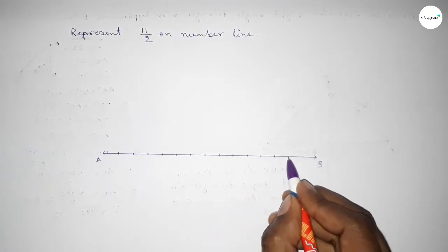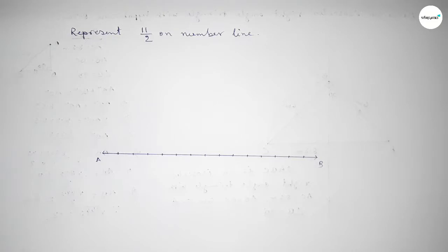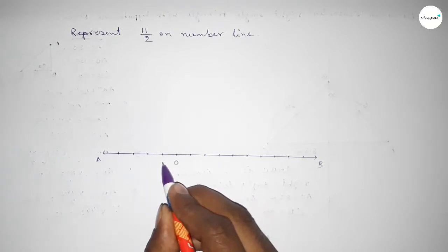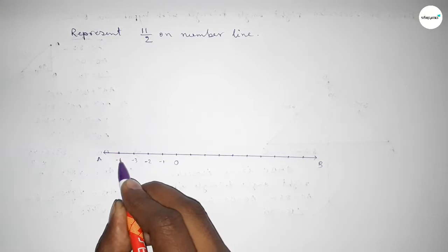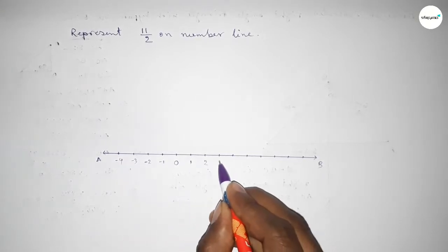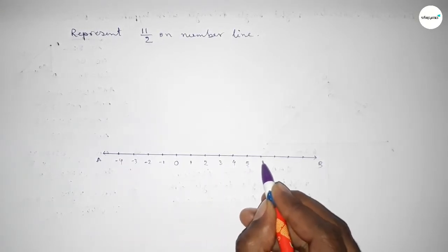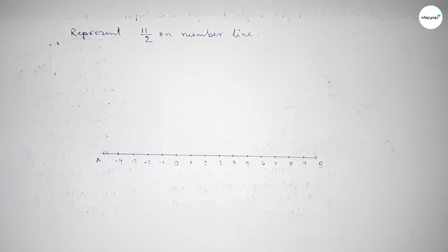Marking the numbers with deep color. Taking here starting number zero and this side minus 1, minus 2, minus 3, minus 4, and this side 1, 2, 3, 4, 5, 6, 7, 8, 9.